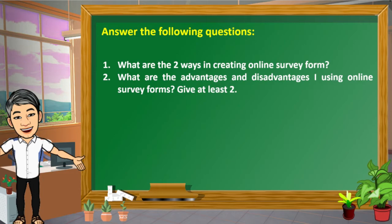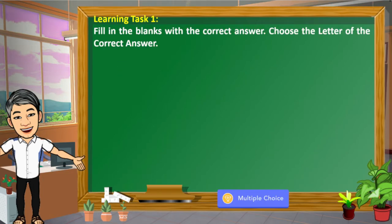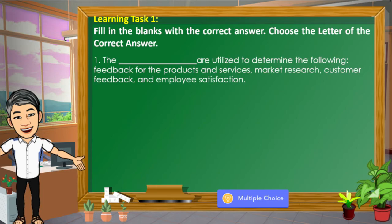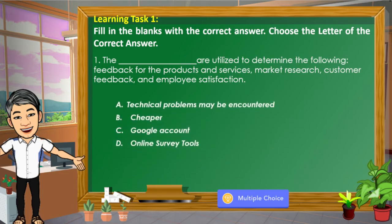You may do this in a separate paper. For your learning task 1, fill in the blanks with the correct answer. Choose the letter of the correct answer. Number 1: The blanks are utilized to determine feedback for products and services, market research, customer feedback, and employee satisfaction. The choices are: A. Technical problems may be encountered, B. Cheaper, C. Google account, D. Online survey tools. The correct answer is letter D.